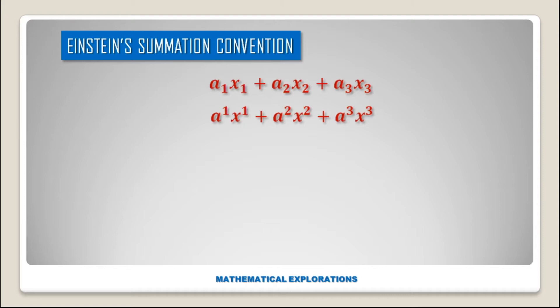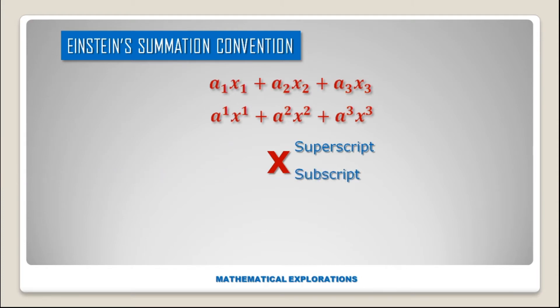The upper indices are not exponents but are indices of coordinates, coefficients, or basis vectors. If the indices are in the upper position, it is known as superscripts or upper suffix. If the indices are in the lower position, it is known as lower suffix or subscripts.